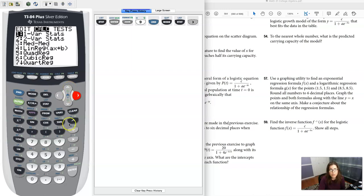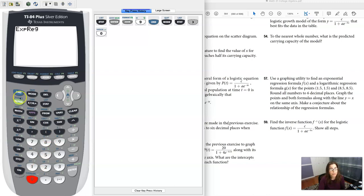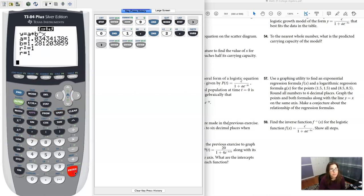So the exponential model I believe is in option 0. Oh good, my memory worked. So let me do L1 against L2 and put that into Y1. All right, so I've got all that. I'm gonna hit enter and there's my exponential model.